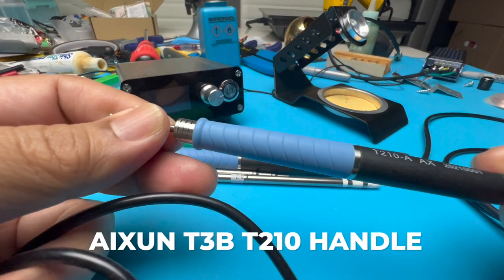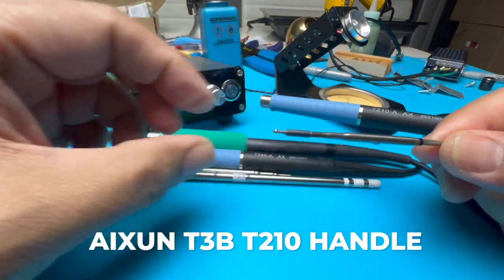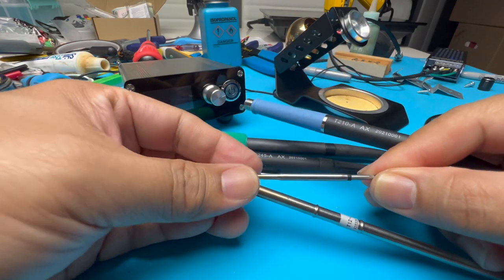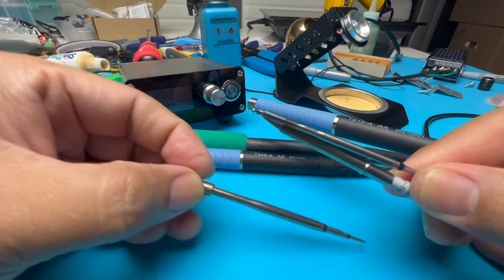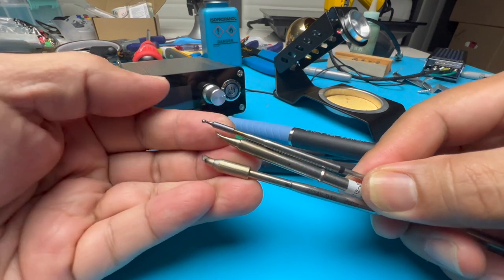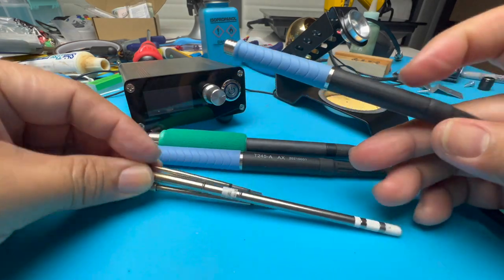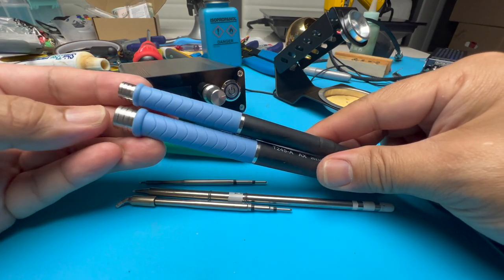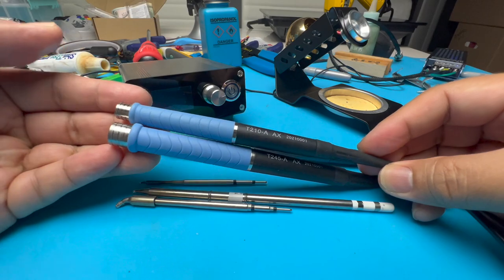For C210 tips, I recommend the Iksun T3B T210 handle. Although again, you will need to replace the plug. Compare how small the C210 tips are compared to the other tips. Really recommended only for fine soldering jobs. The handle is also smaller than the Iksun T3A T245 handle.